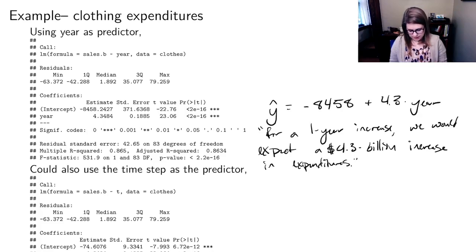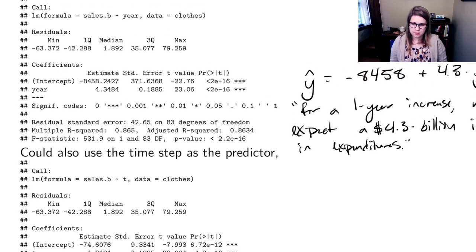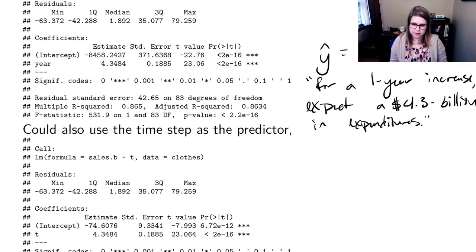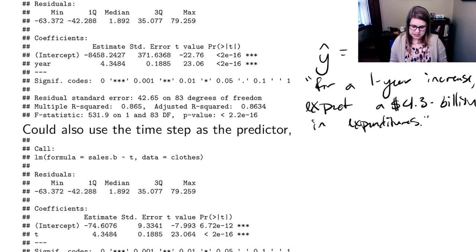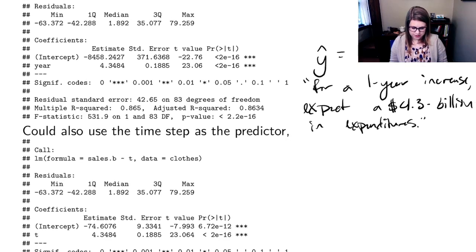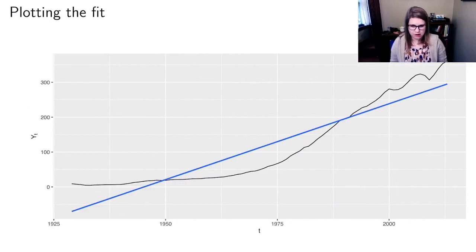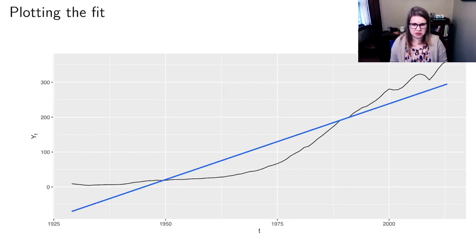We could also have used the time step T as the predictor instead of the year. Fitting sales on T gives basically the same result — a slightly different intercept since it's in terms of T rather than years, but the slope is exactly the same. With linear regression, it doesn't matter whether you use the original year or the T variable. We can also plot the fit, using blue to show the model line, and it sort of looks like it matches the data.